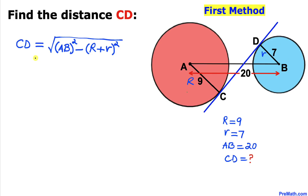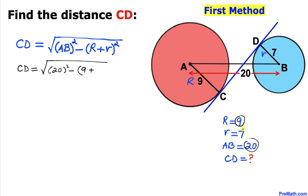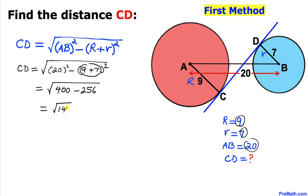Here is a quick and simple formula to calculate CD: CD = √(AB² − (R + r)²). Let's fill in the values. CD = √(20² − (9 + 7)²). Simplifying: 20² = 400, and 9 + 7 = 16, so 16² = 256. Then 400 − 256 = 144.